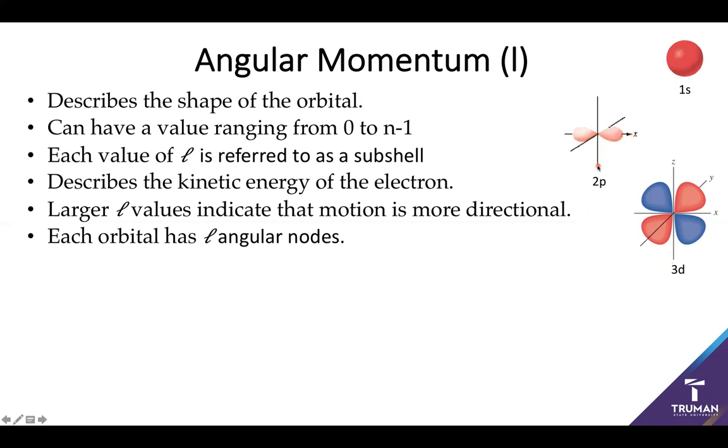If l is two, it moves side-to-side in two directions. This generates what we call angular nodes. If l is zero, there's no angular nodes, existing equally in all directions. l equals one, I have one angular node - one direction where I've got no probability density. l equals two doesn't exist in two directions.